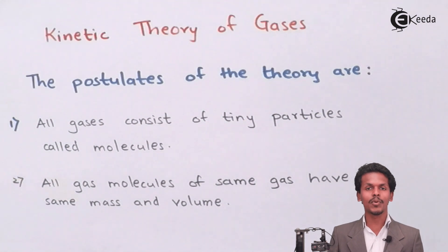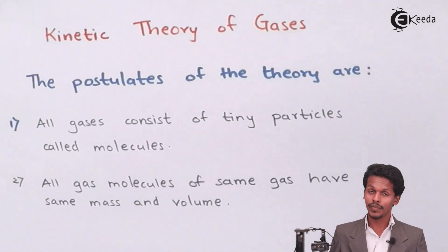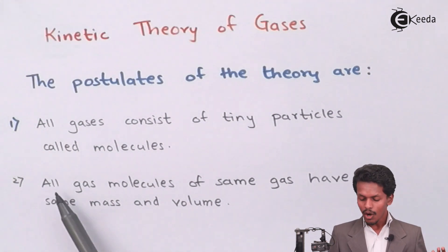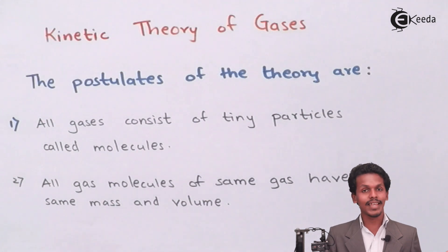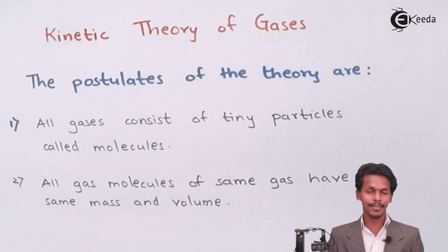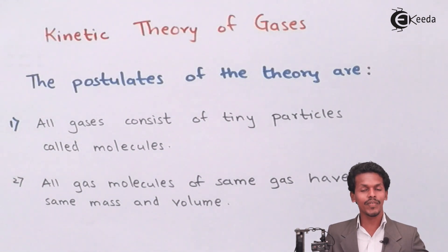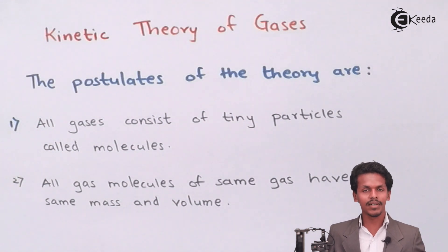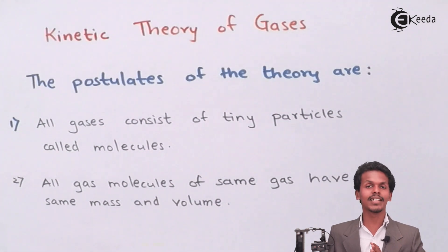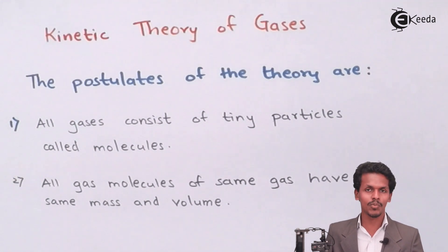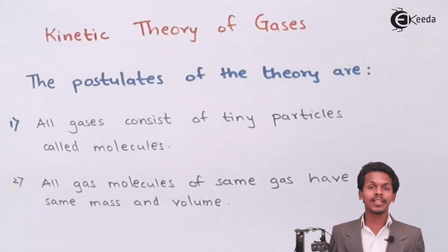A molecule is made up of a group of atoms, or it is the smallest particle of a gaseous compound. The second postulate is that all gas molecules of the same gas have the same mass and volume. Different gases have different atomic or molecular masses, so molecules of the same gas — for example, carbon dioxide — will have the same mass and volume as other carbon dioxide molecules.